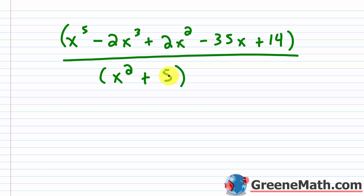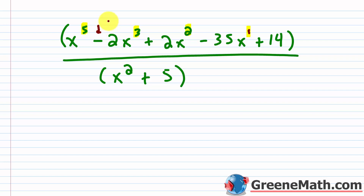The first thing you want to look for here would be missing powers. If you notice in the numerator, or the dividend, we have x to the fifth power, x cubed, x squared, and x to the first power — but we don't have x to the fourth power. So we need to insert a 0x to the fourth power.